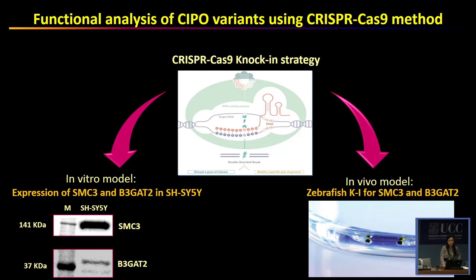The future direction of this study is to perform functional analysis of these variants found in the large cohort of patients using a genome editing approach like CRISPR-Cas9. We are currently performing a knock-in strategy with CRISPR-Cas9 in an in vitro model, using the SH-SY5Y cell line as a neuronal model, which expresses both SMC3 and B3GAT2 protein as confirmed by Western blot analysis. We are also currently developing an in vivo knock-in zebrafish model for the variants found in SMC3 and B3GAT2.